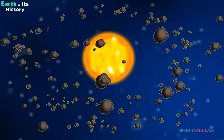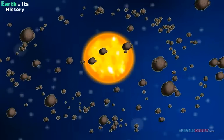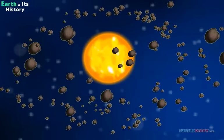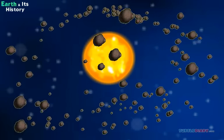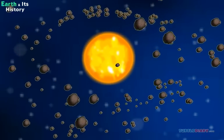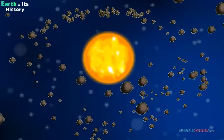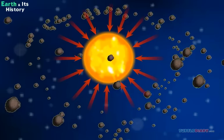After the sun was formed, there were pieces left over. There were dust, metals, and rocks. They were going out into space. But they started to be pulled in by the sun's gravity.